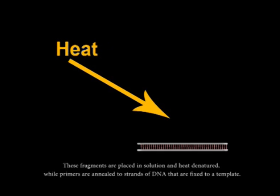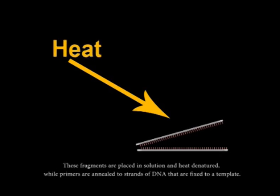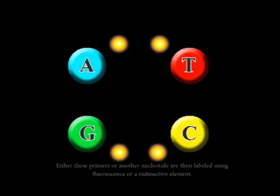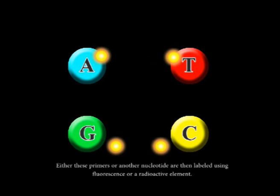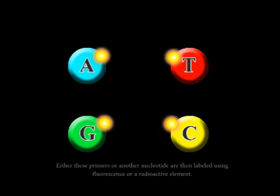These fragments are placed in solution and heat denatured, while primers are annealed to strands of DNA that are fixed to a template. Either these primers or another nucleotide are then labeled using fluorescence or a radioactive element.